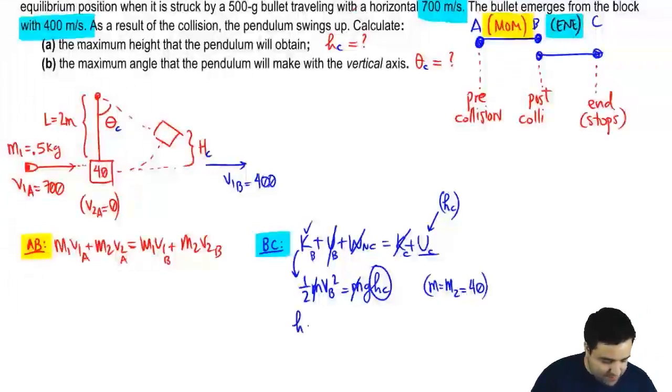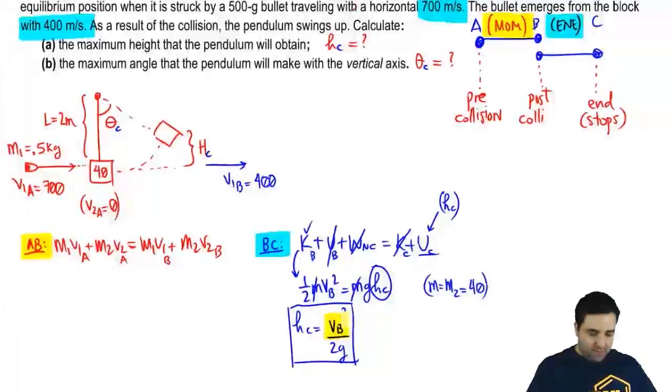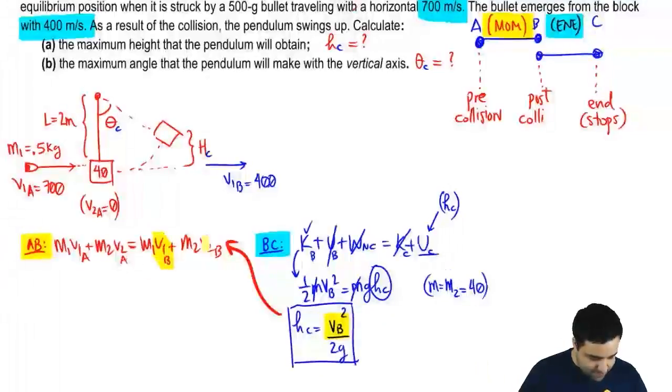Okay. All right. So I want to find HC. HC is VB squared over 2G. And at this point, we can't make this any simpler. We're ready to plug in numbers, except that we don't have VB, right? You don't have VB. So we're going to have to go get VB and then come back. So obviously, if we're stuck on the second equation, then it's because we have to go to the first equation. And in fact, you see that there's VBs right here. Okay. There's VBs right there.